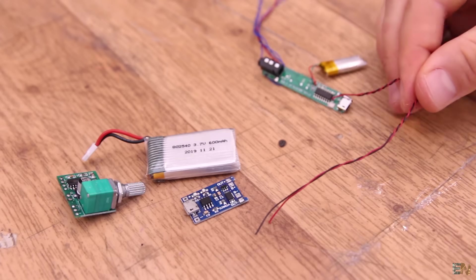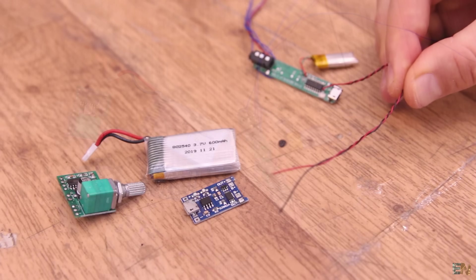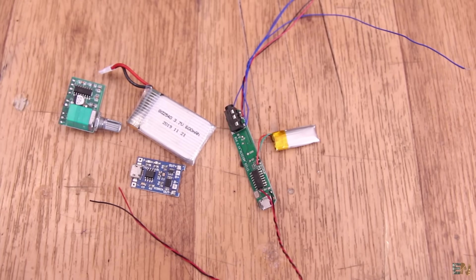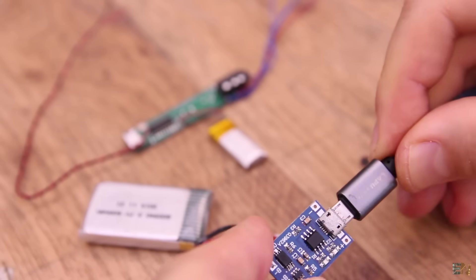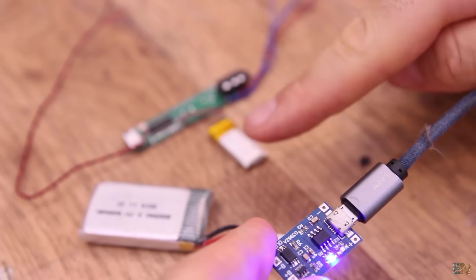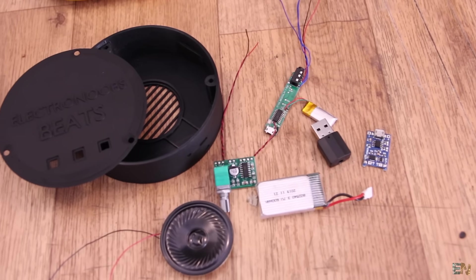From this module I will solder 2 wires for 5V and connect those to the Bluetooth module charging port. So in this way, with one USB connector, we can charge both batteries at the same time. Okay, so get the schematic from below and let's make the connections and test it.